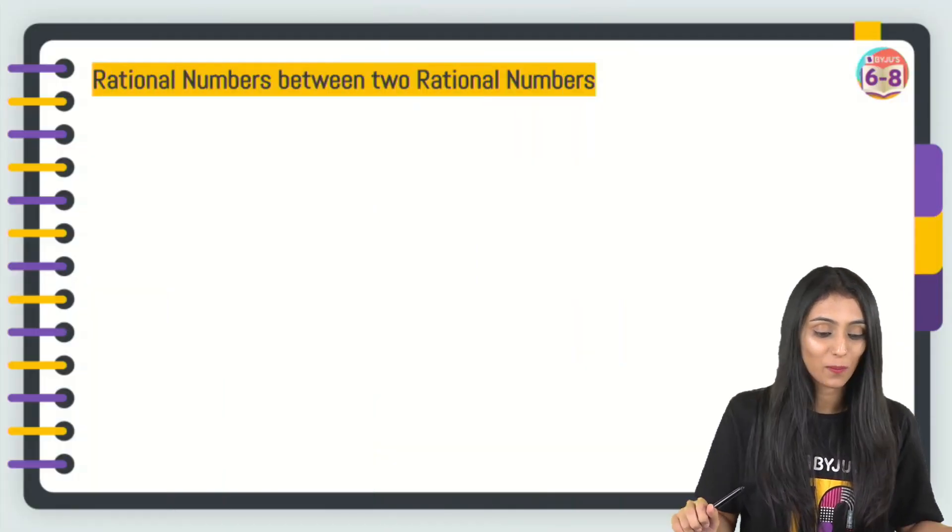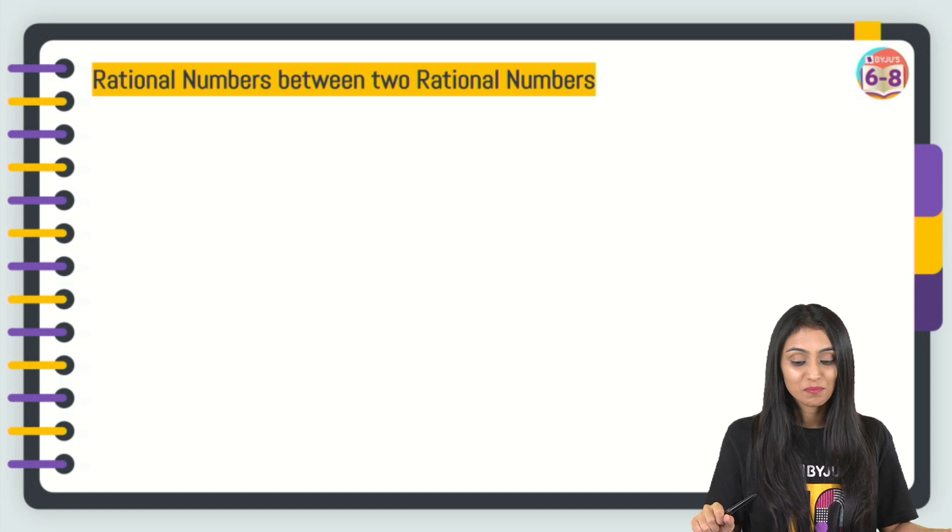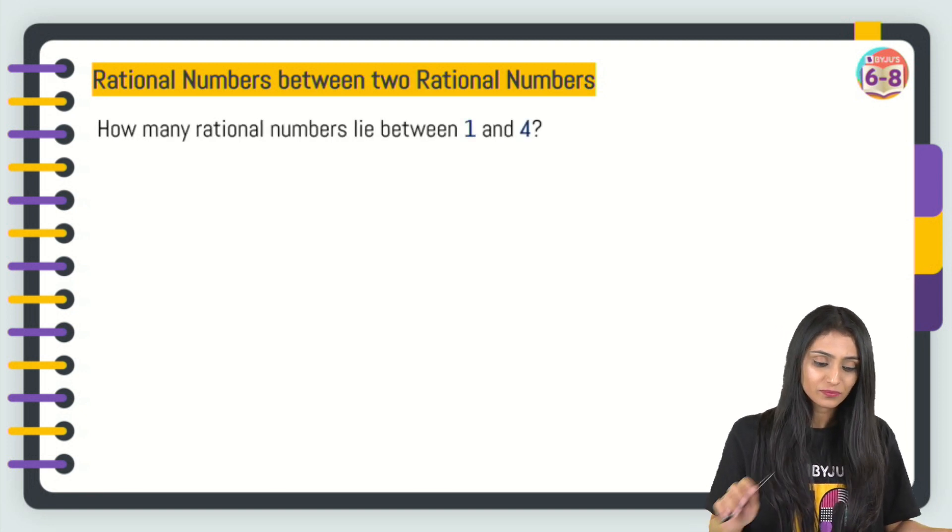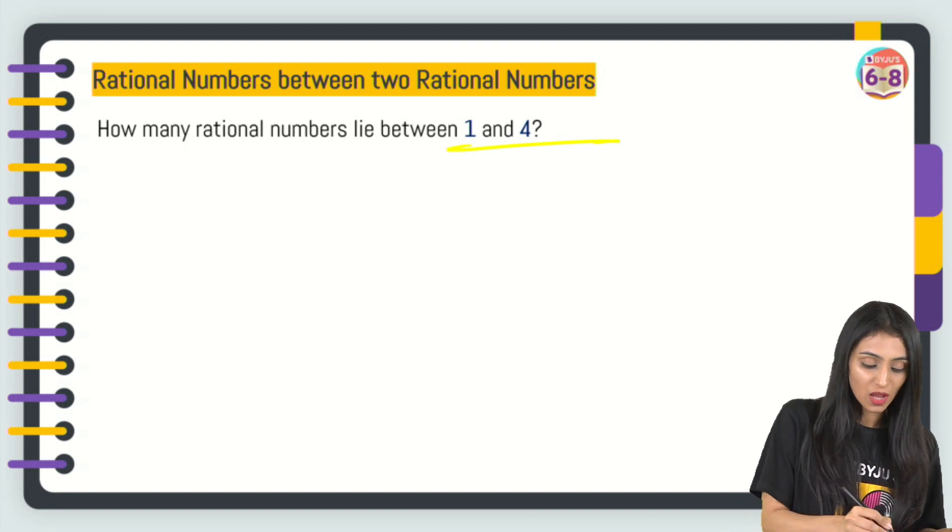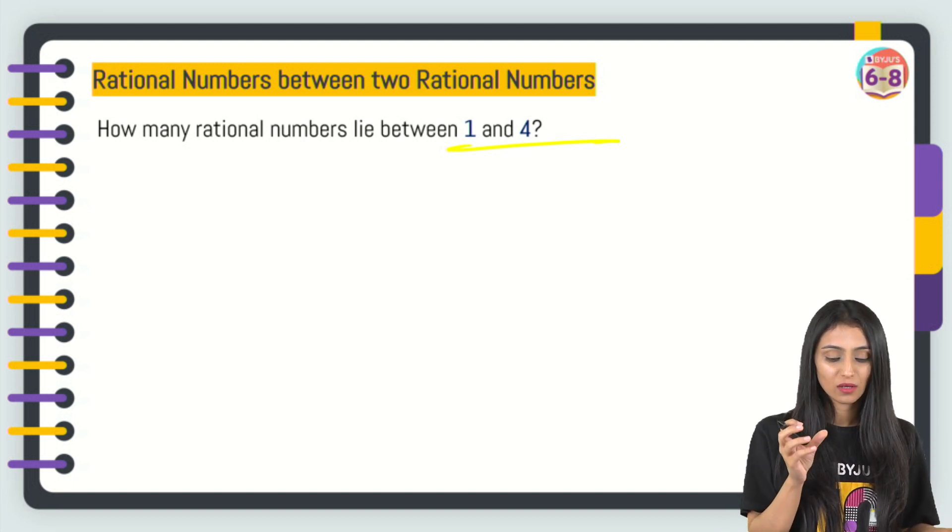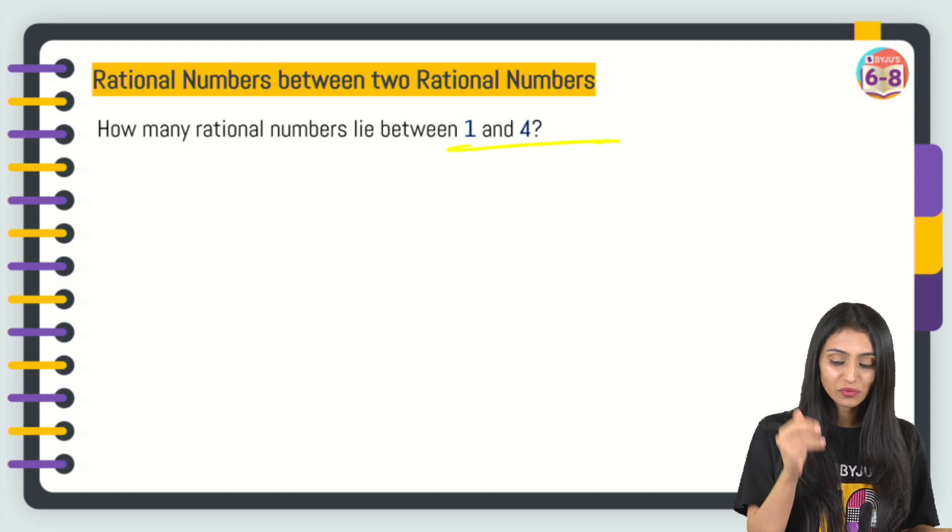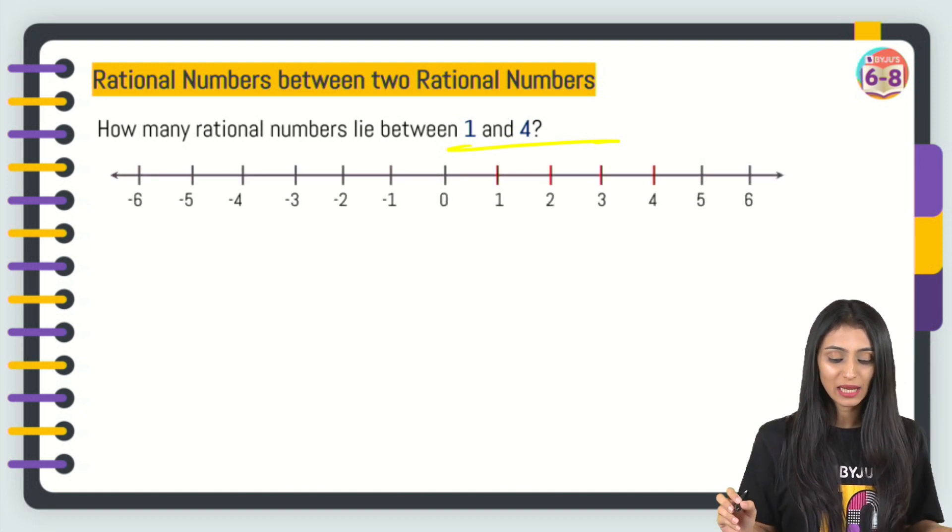For now, let's get started with our topic. How to find rational numbers between two rational numbers? Let's suppose I had to find out the rational numbers between 1 and 4. What will we do in that case? 1 and 4, there are only two numbers, 2 and 3. But if you think about it, let's draw a number line. 1 is here, 4 is here.